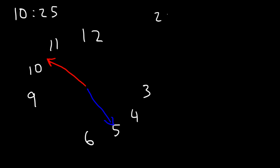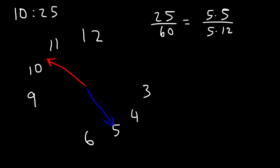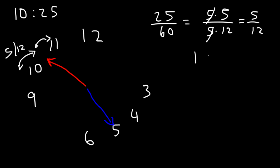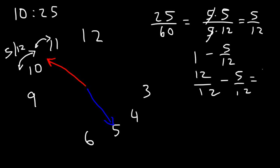Now let's find the fraction of 25 divided by 60. So 25 over 60: 25 is 5 times 5, and 60 is 5 times 12, so it's 5 over 12. Therefore, between the hour hand and 10 is 5 twelfths of 30 degrees. And between the hour hand and 11, that's going to be 1 minus 5 over 12, which is 12 over 12 minus 5 over 12, so that's 7 over 12. So 7 twelfths of 30 degrees is the angle between the hour hand and the 11th hour.